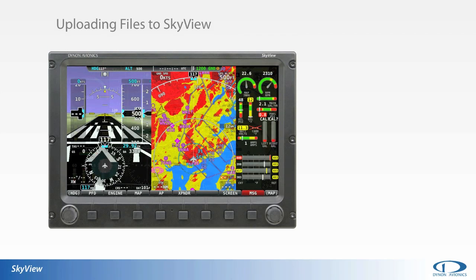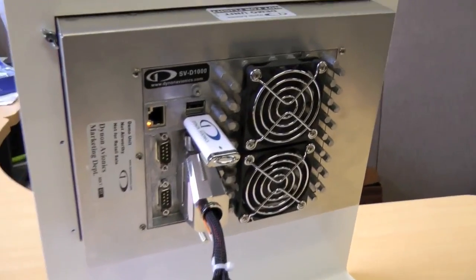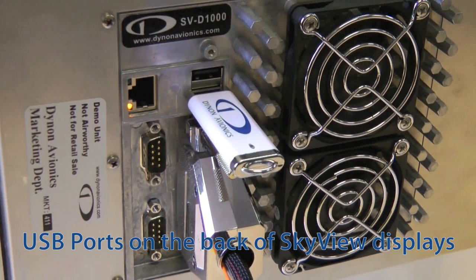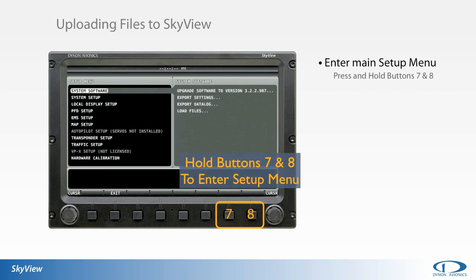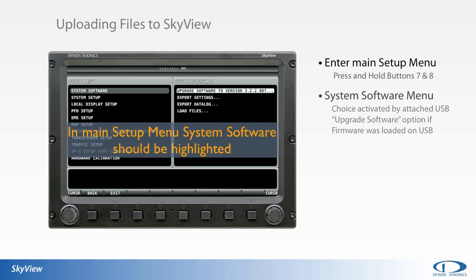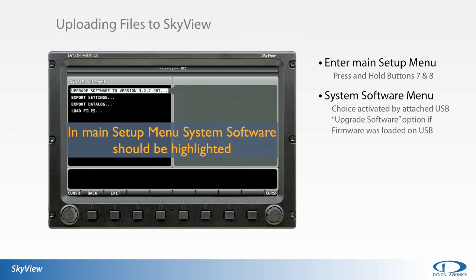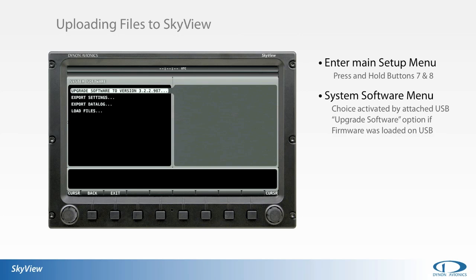To upload your firmware, configuration, and database updates to Skyview, insert the USB stick in any of the three USB ports on your Skyview display — two ports are located on the back side of the unit, while a third port is available in a pigtail in the standard Skyview wiring harness. Once the USB is connected, enter the main setup menu by holding buttons 7 and 8. The setup menu should open with System Software highlighted, signifying that the system has recognized the attached USB drive and the associated files. Any required firmware upgrade should be accomplished first; after the unit is loaded and rebooted with the new software version, the remaining configuration files, engine sensor definitions, or databases can be loaded.